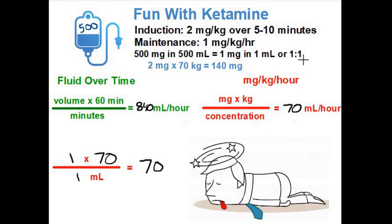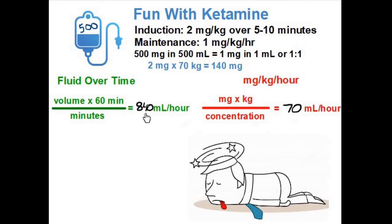When you mix up ketamine in a one-to-one concentration, all you really have to remember is the patient's weight is the same as the milliliters per hour for the maintenance dose. Two simple calculations: 840 milliliters per hour to give the induction dose, stopping at 140 cc, then running at 70 milliliters per hour for your maintenance dose. I hope by continuing to practice these calculations you're increasing your comfort level with the math involved, and I hope you had just a little bit of fun with ketamine. We'll see you next time.